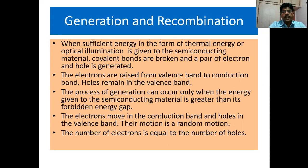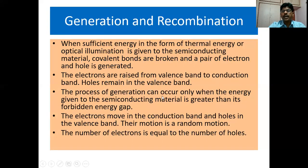In a semiconductor we have the valence band and the conduction band, separated by a small energy gap. When sufficient energy in the form of thermal energy or optical illumination is given to the semiconducting material, covalent bonds are broken and a pair of electron and hole is generated. The electrons are raised from the valence band to the conduction band whereas holes remain in the valence band. Generation can only occur when the energy given is greater than the forbidden energy gap.